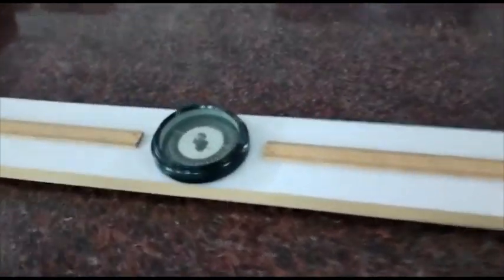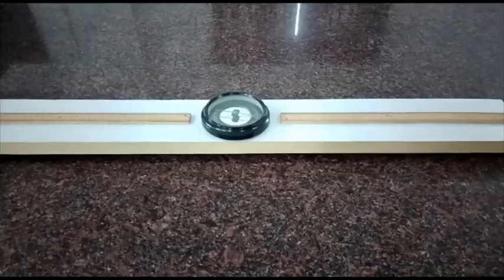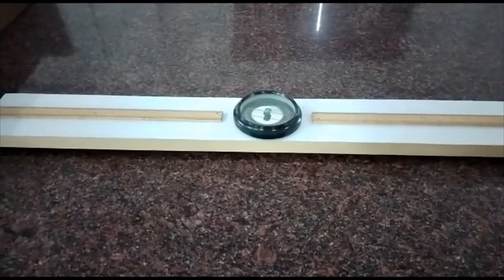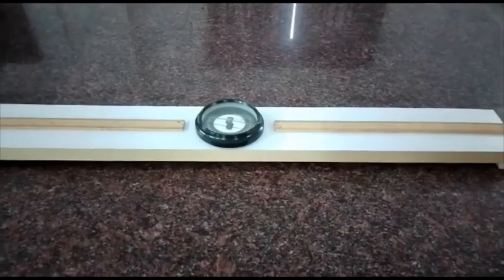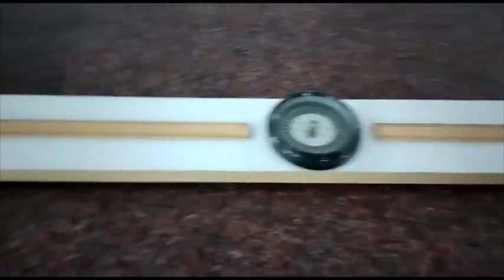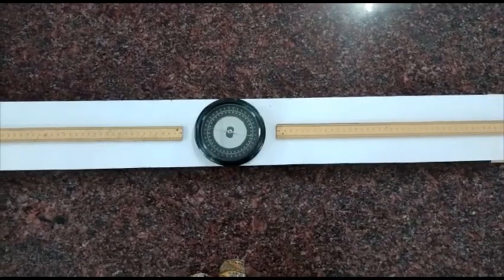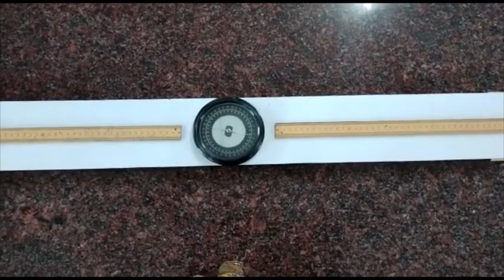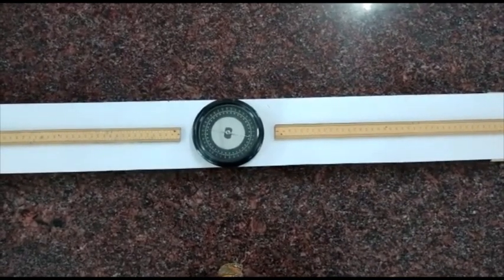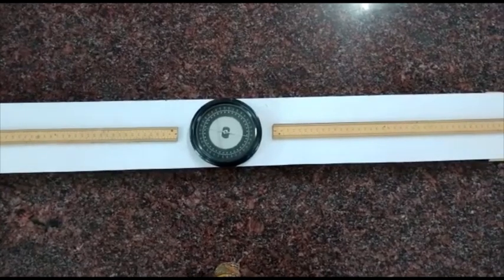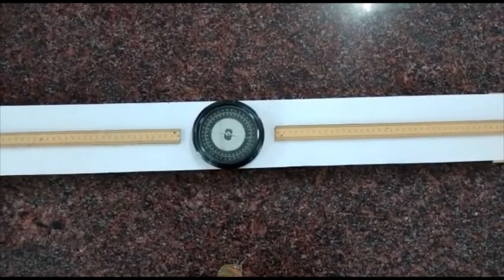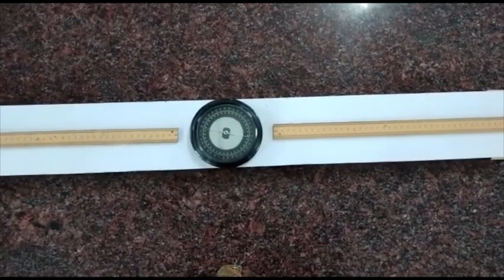It also contains two scales which are the arms of this deflection magnetometer. The arms coincide at the center of the compass box, that means the readings start from the center of the compass box.